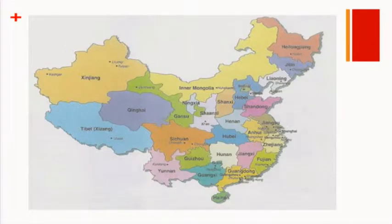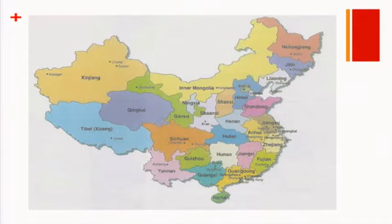I like to often start my lectures with a map of China. I was happy to note that so many of you have actually been to China, so this is obviously not a new map. For many of you who teach world history and China in your classes, this is not new either. As Tom talked about, there's a lot of diversity geographically in China — ethnic, religious, and also environmental diversity.